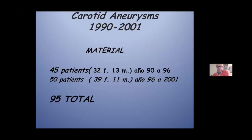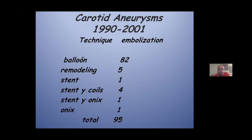Now I'd like to present some reflections on my experience. In giant carotid aneurysms from 1990 to 2001, I treated 95 patients. The first group — 45 patients, 1990 to 1996 — treated only with balloon occlusion test. From 1996 to 2001, balloon occlusion test and other techniques. Totally 82 patients treated with balloon occlusion of the parent vessel, fibromuscular dysplasia cases, one stent, one stent-coil, one stent-onyx. Total 95 patients from 1990 to 2001.